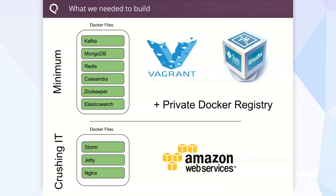If we were crushing it after about 20 hours, we were going to try to get Storm, Jetty, and NGINX, and maybe not just deploy it on the Mac laptop but take that whole environment and deploy it right to Amazon. Where we got was actually really, really far — we completed all the minimum stuff in about 12 hours.